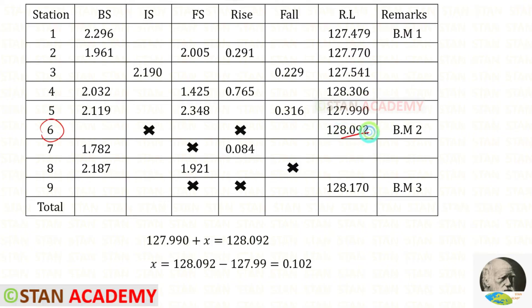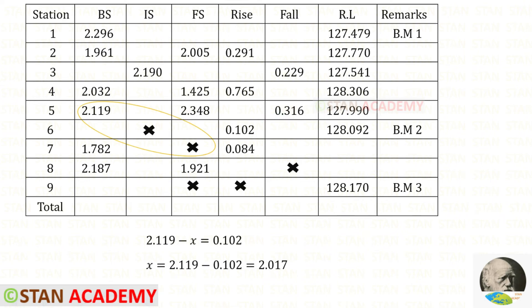In station number 6, this reduced level is given. To get this reduced level, we add this rise to the previous reduced level. We can take this to the other side — it will come as negative. In this way we will get this rise as 0.102. Let us enter that. Now we can take from this back sight to this fore sight. This minus this, we will get positive 0.102 because that is rise. Using that concept we can find x. Let us enter that.